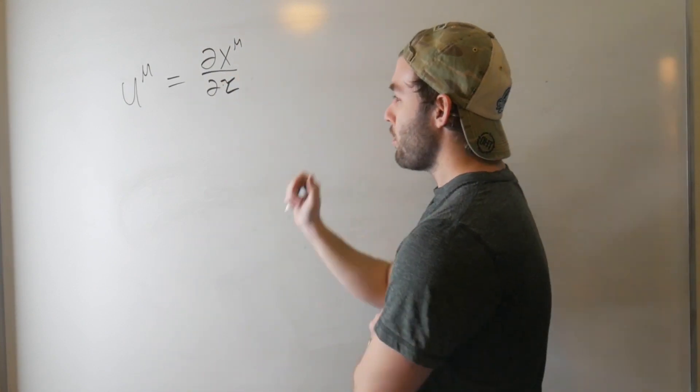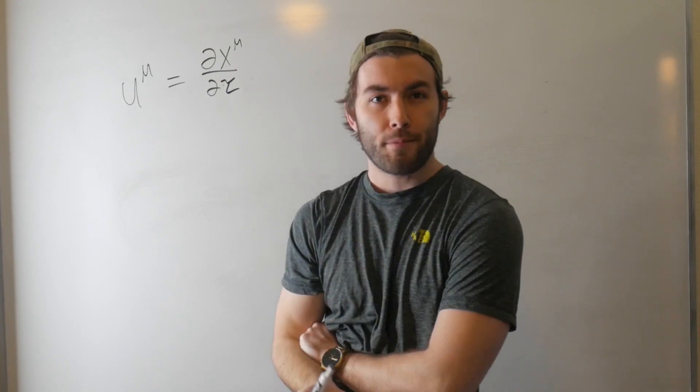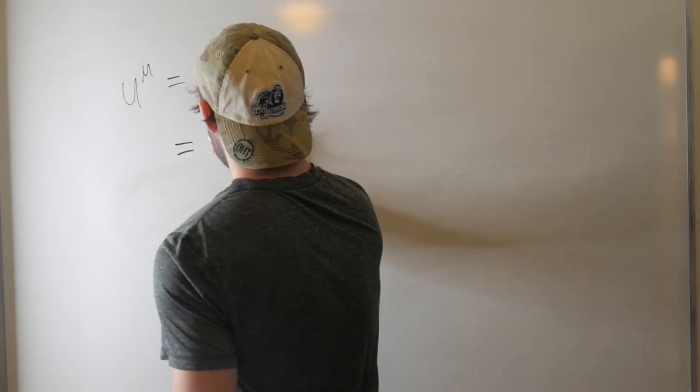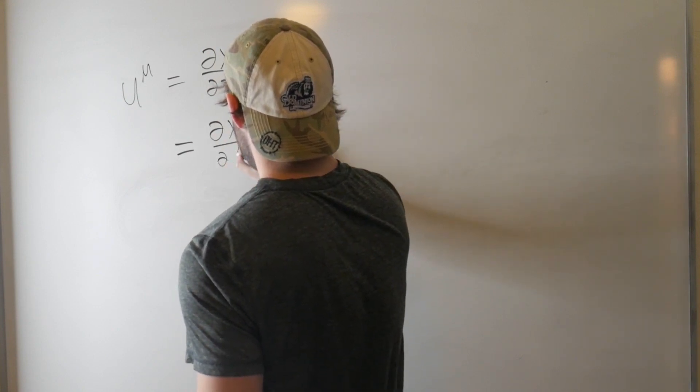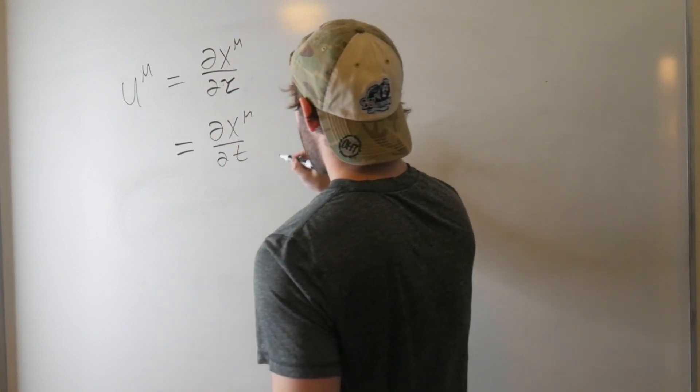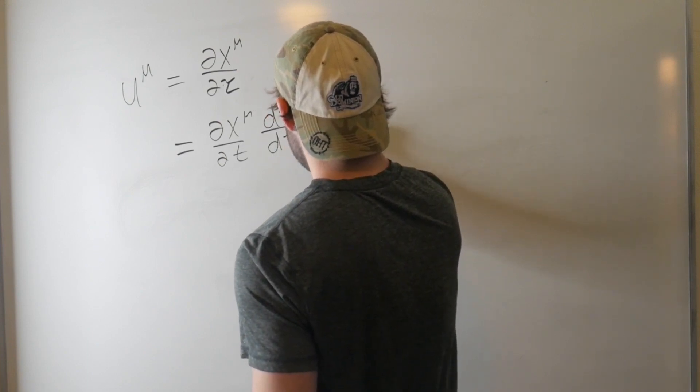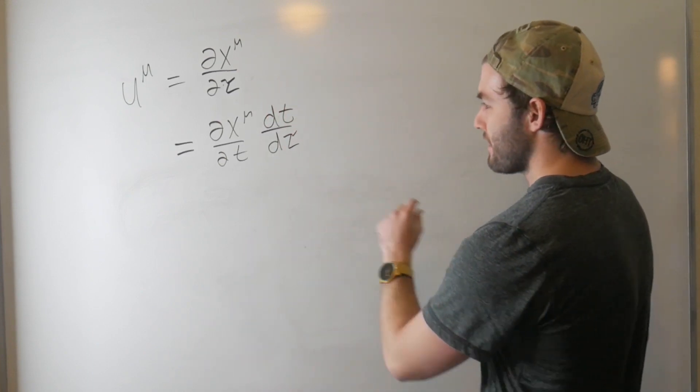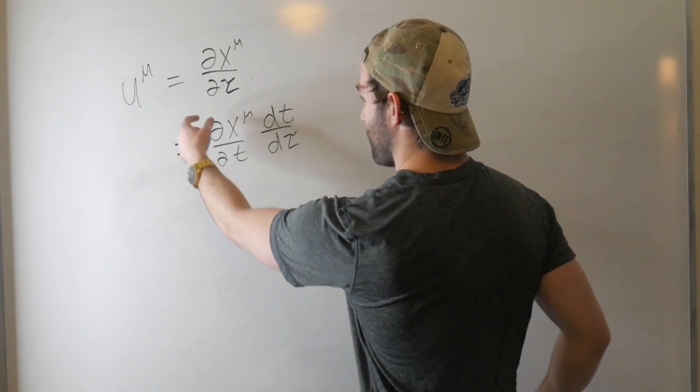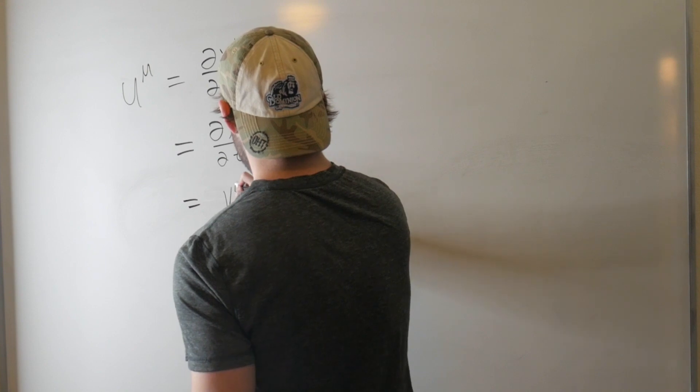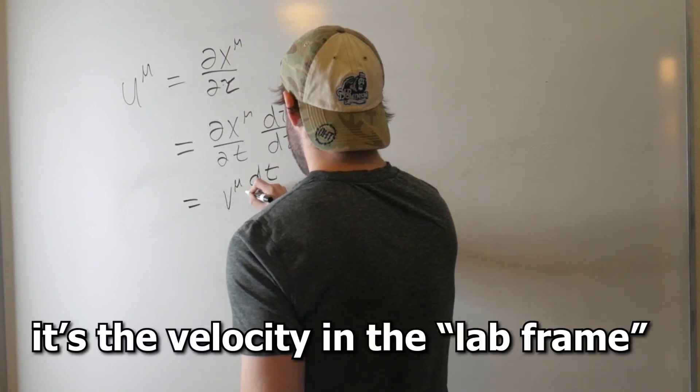But these coordinates also depend on time. So, in order to do this, we need to use some chain rule. So, this is equal to dx^μ dt, which we just kind of calculated, times chain rule. So, dt over dτ. And let's just call this the regular velocity. We'll denote it with a v. So, this is equal to v^μ dt over dτ. And now, we just got to calculate whatever this is.